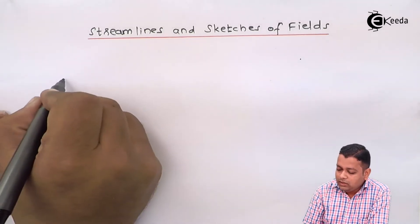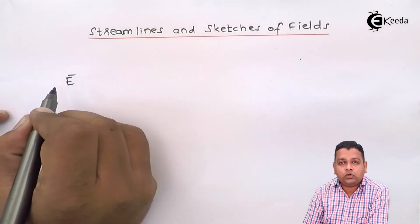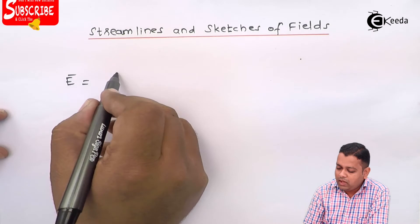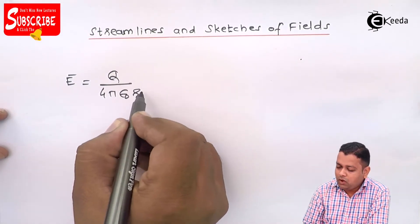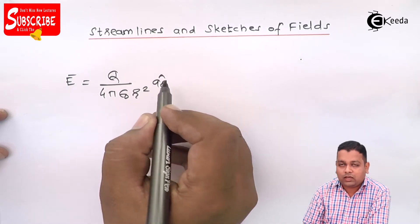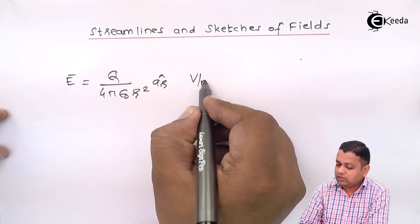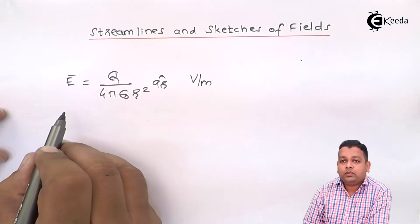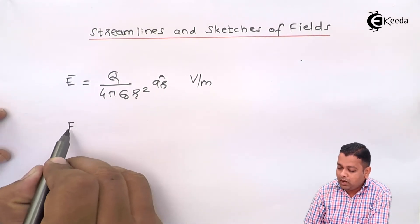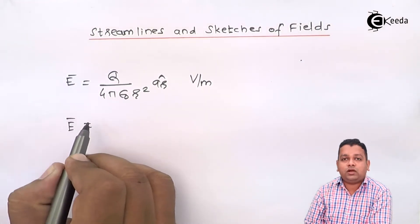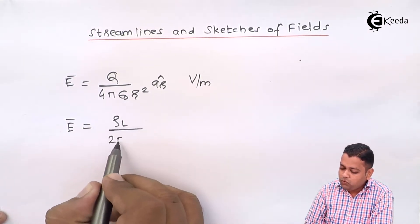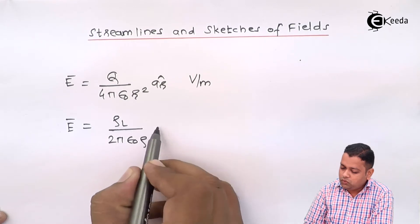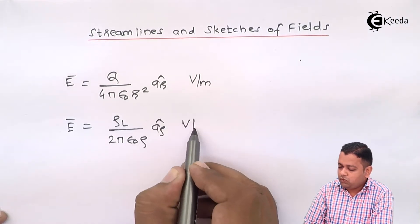Now we know that the electric field intensity because of a point charge is given by q upon 4 pi epsilon 0 r square a r cap. The unit of measurement is volts per meter. If the charge configuration is a uniform infinite line charge, that time we write E1 is equal to rho L upon 2 pi epsilon 0 rho a rho cap volts per meter.